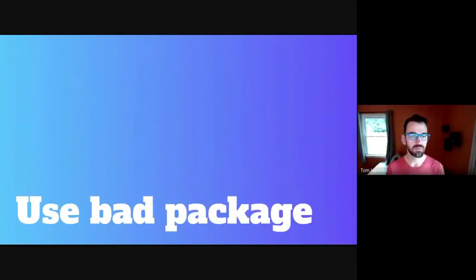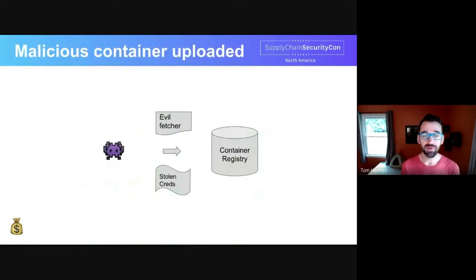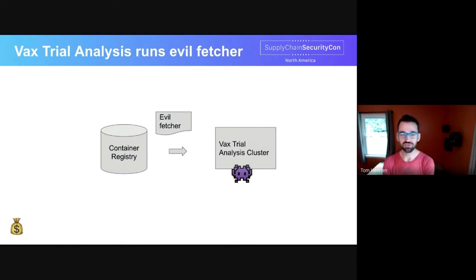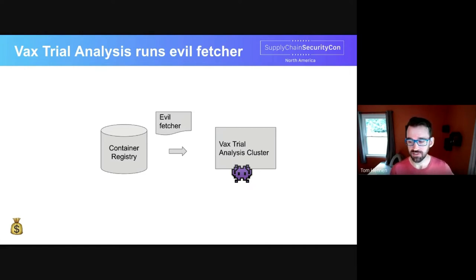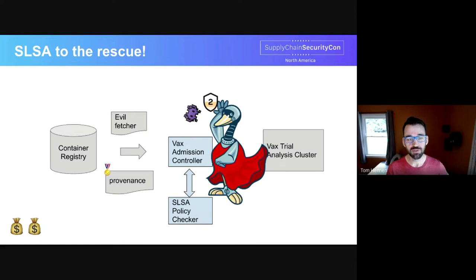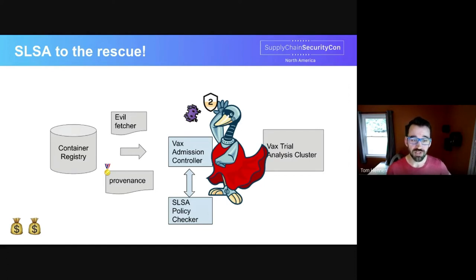Thanks, Joshua. We'll start our discussion with the gremlin trying to get users to use a bad package. Somehow a gremlin has managed to steal credentials to the fetcher container repo, which is used by thousands of projects, and uses those credentials to upload a malicious version of the fetcher image. Then, during a routine update, the Vax trial analysis cluster runs the latest version of the fetcher container image, giving the gremlin access to all the data in the cluster. But it doesn't have to be that way. SLSA comes to the rescue: the trial analysis cluster is protected by an admission controller using a SLSA policy checker, which uses published SLSA provenance signed by the builder to check the image against a policy before running it. The gremlin can't fake the provenance with the stolen container registry credentials, so the admission controller blocks use of the evil fetcher.